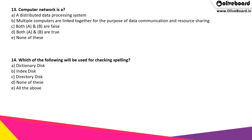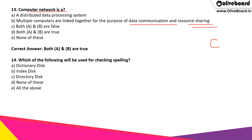Computer network — which of the following is the correct answer? A computer network is basically a distributed data processing system, and multiple computers are linked together for the purpose of data communication and resource sharing. A network of computers helps us distribute data processing and also helps us in data communication and resource sharing. Hence, both A and B are true.